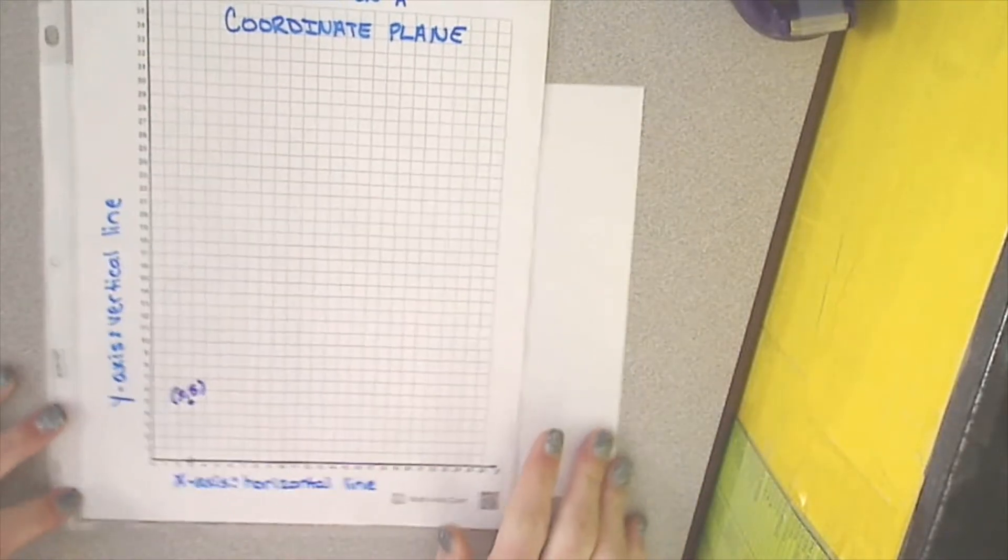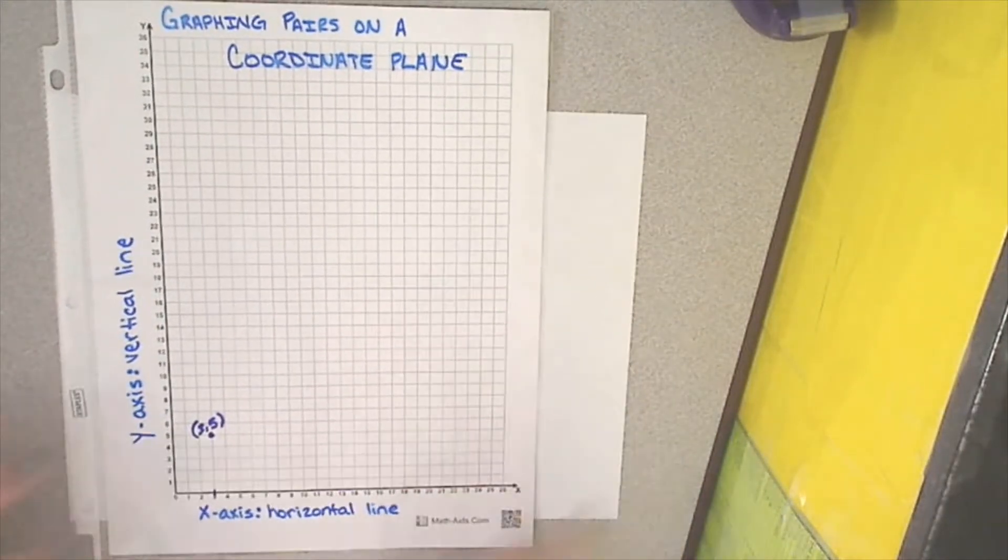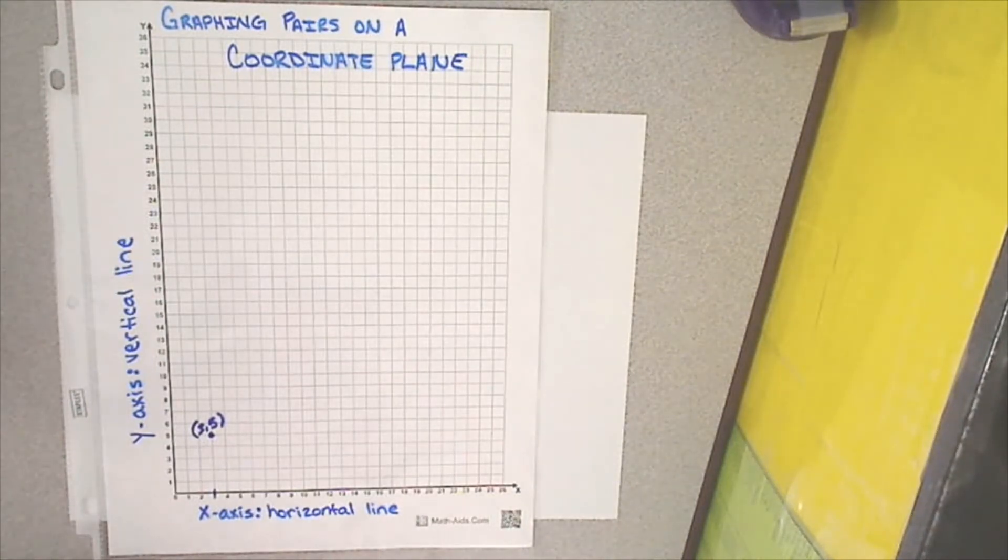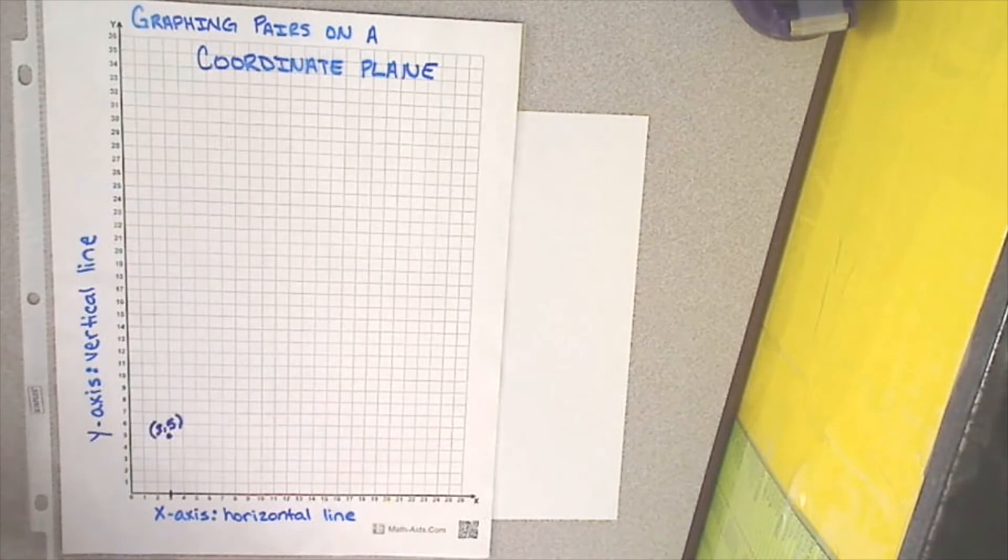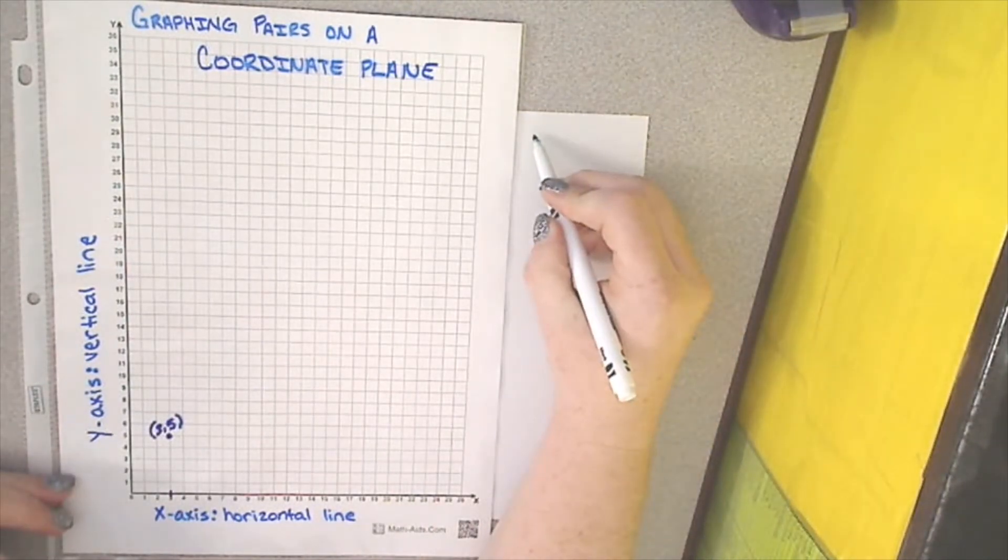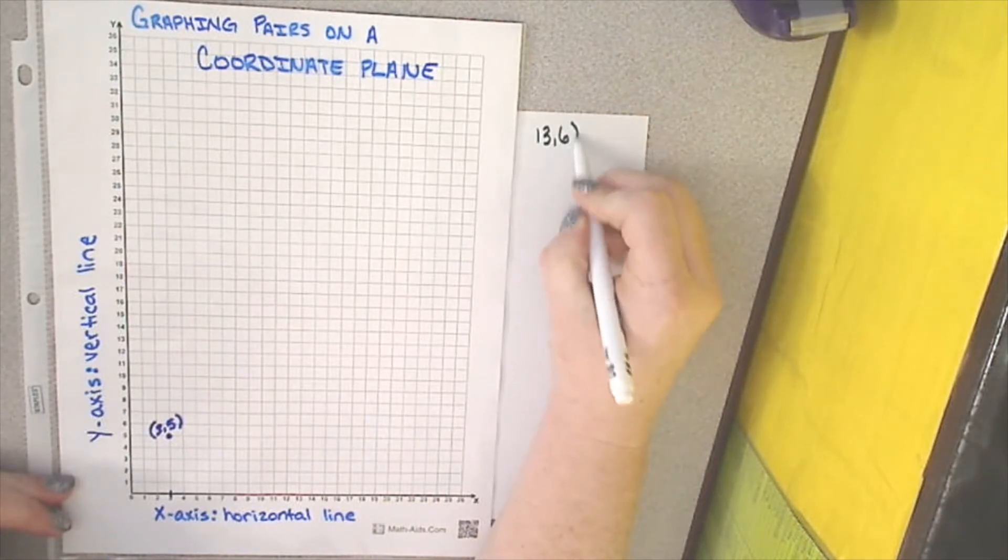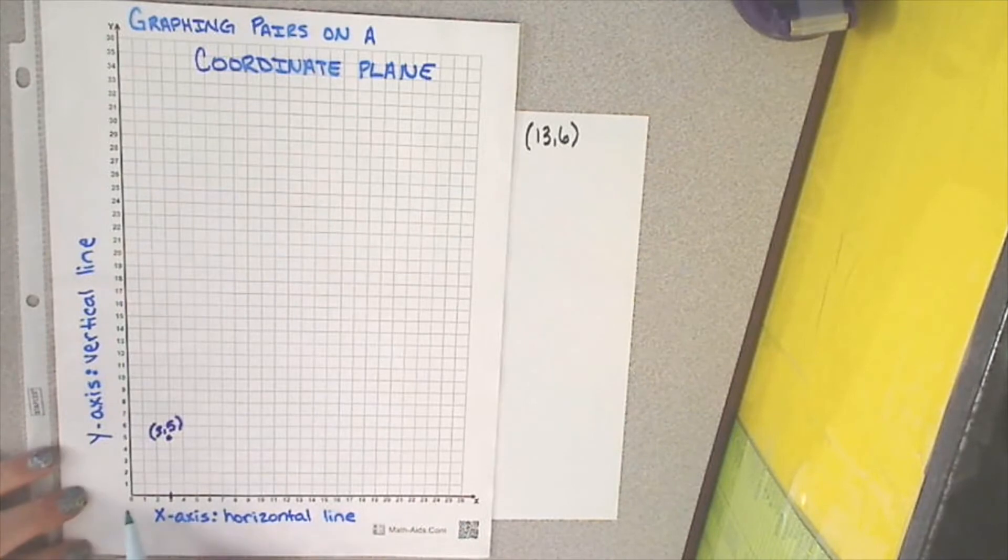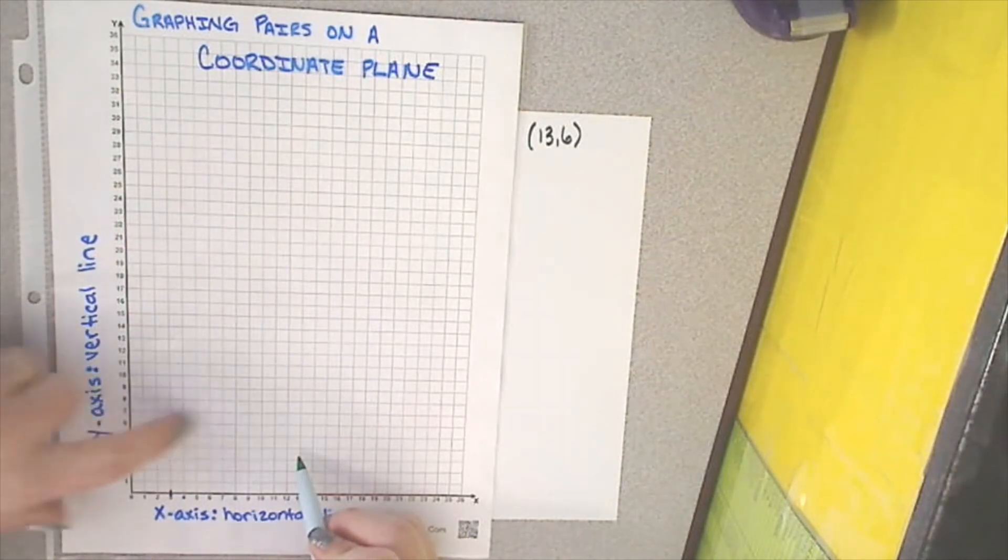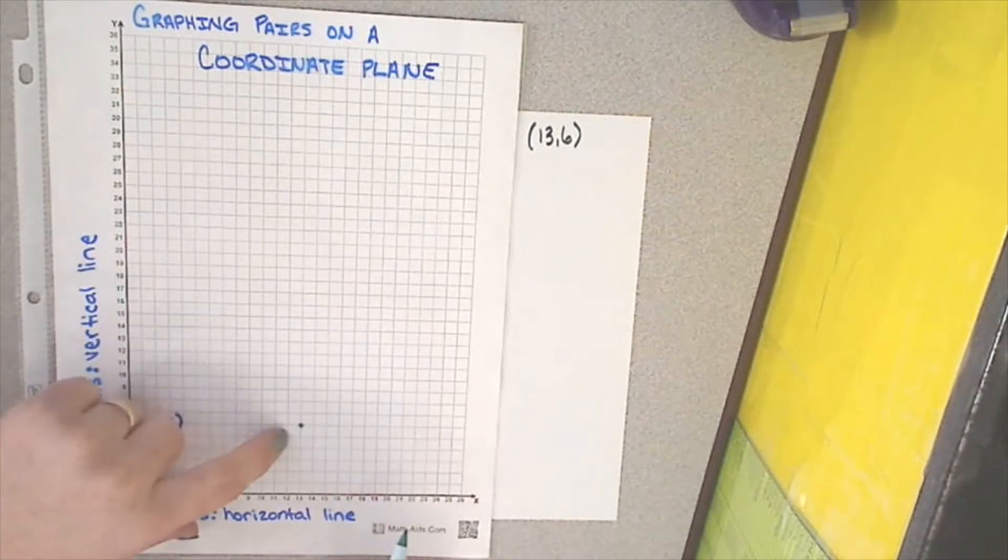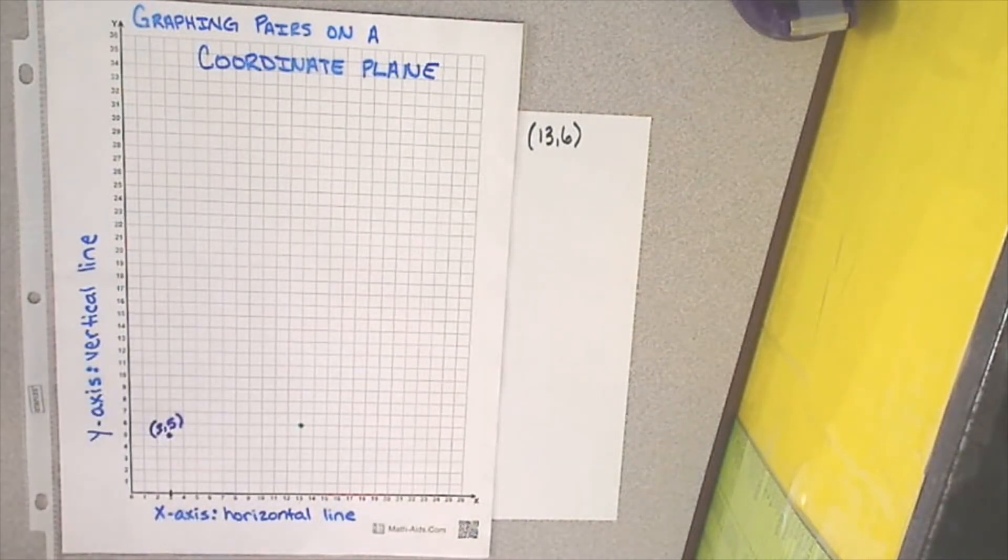So, in order to give you a really good idea of how this works, we are going to find a picture. Now, our first pair that we graphed is not part of our picture, but I'm going to go ahead and leave it there. We are going to start by finding 13 comma 6. So, I'm going to come to my x-axis and come down until I find 13. And I'm going to go up until I find where the y-axis point for 6 intersects with 13. So, we have now graphed 13 comma 6.